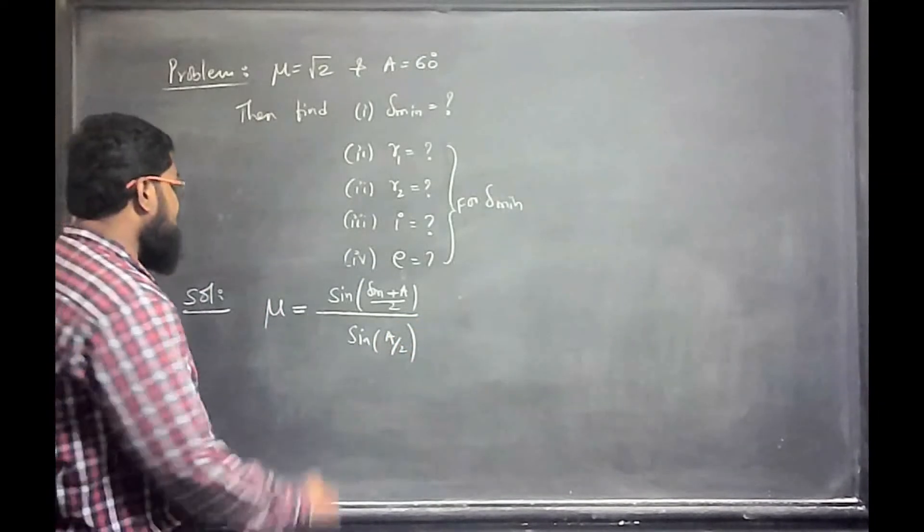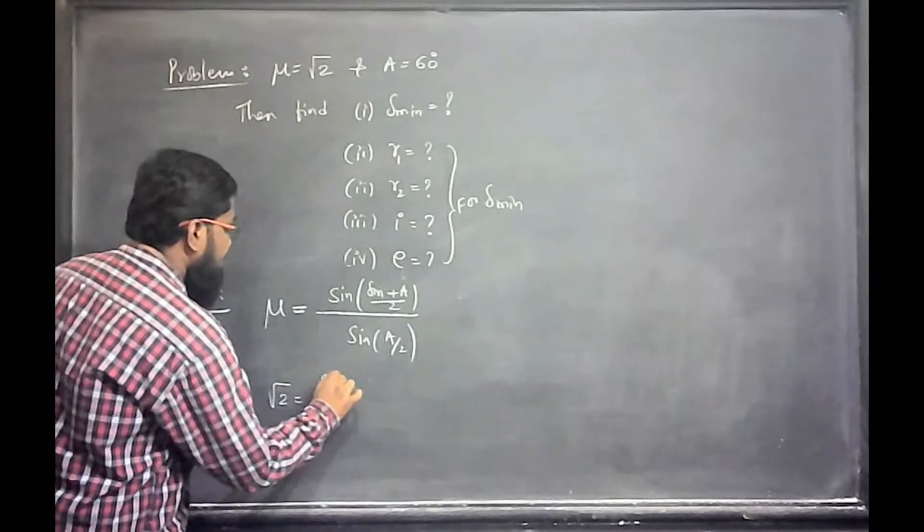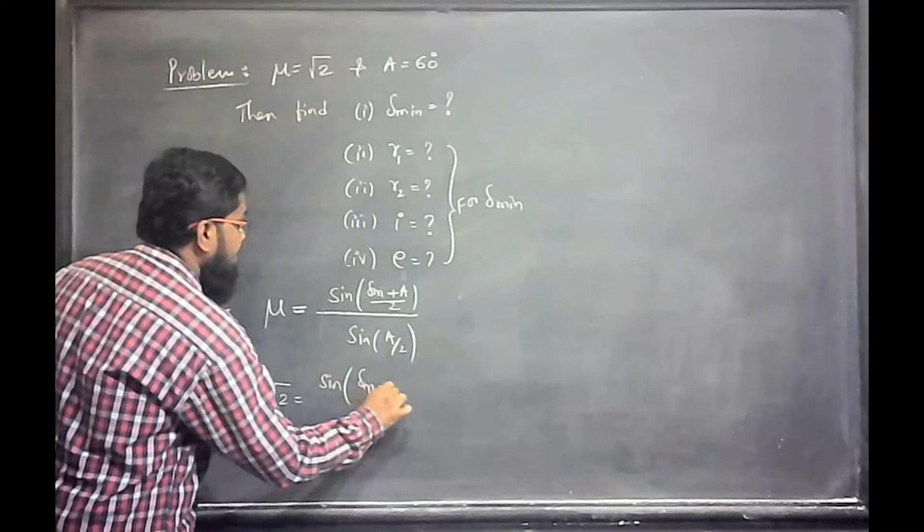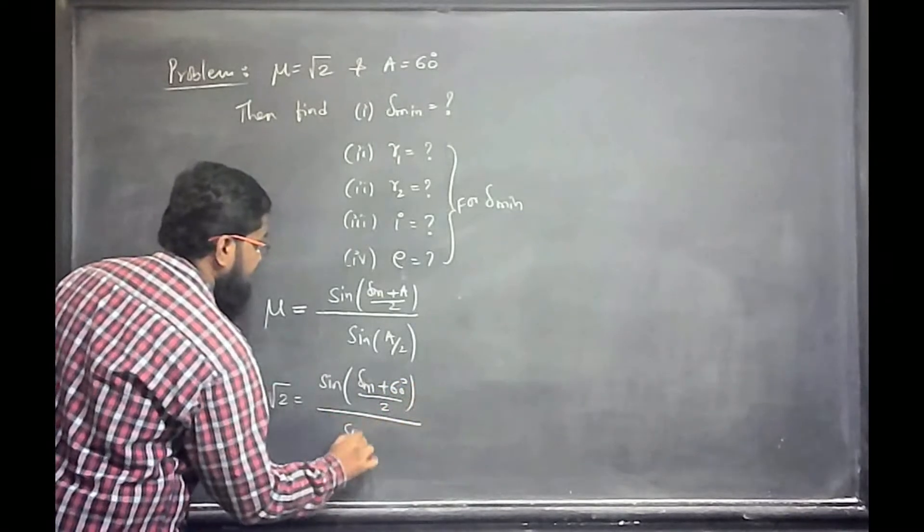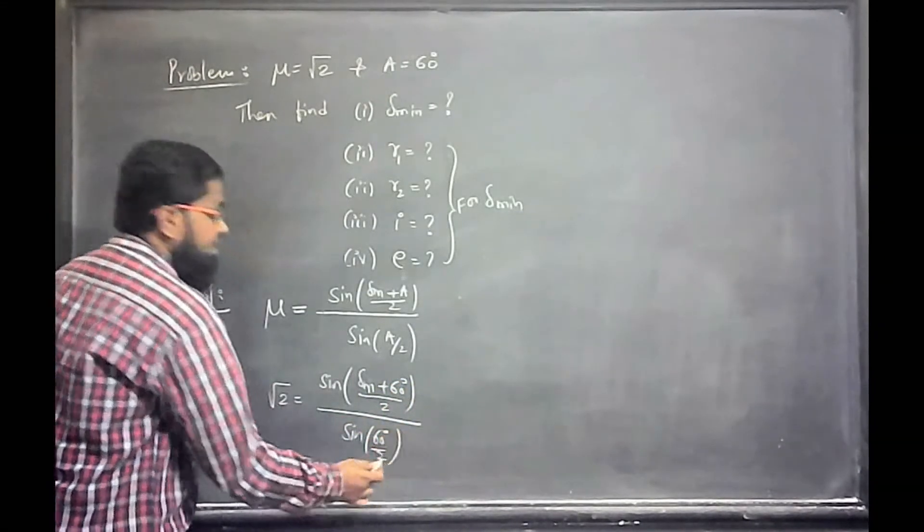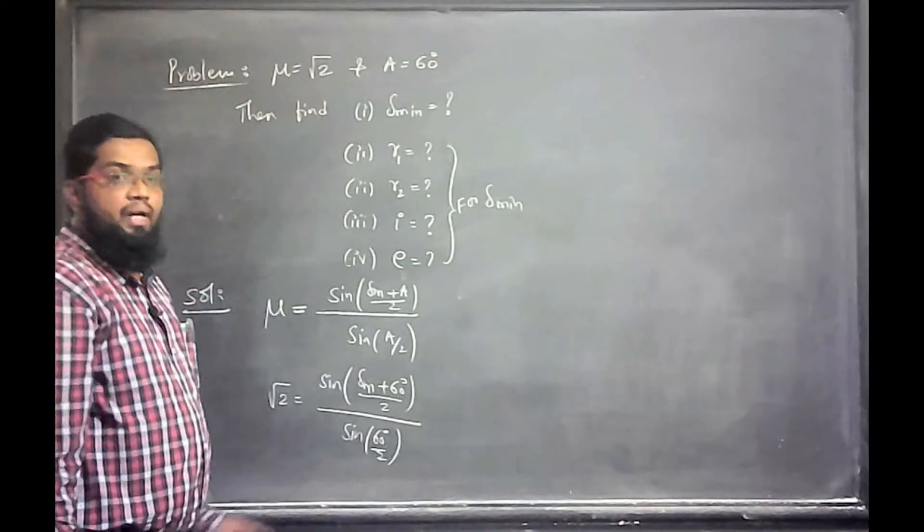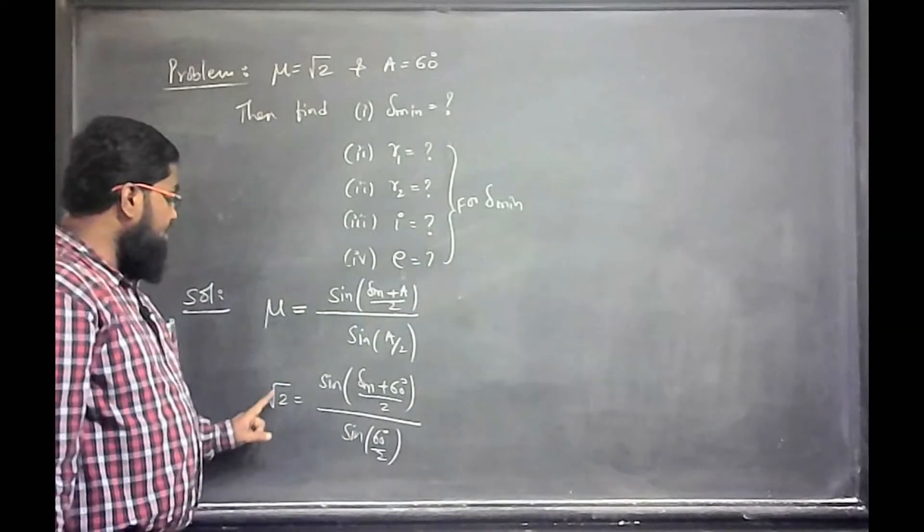Now let us substitute here. μ is √2, sin of minimum deviation. This is 60 degrees by 2. What is sin 60 by 2? 30. What is sin 30 degrees? 1 by 2. This is √2 by 2.